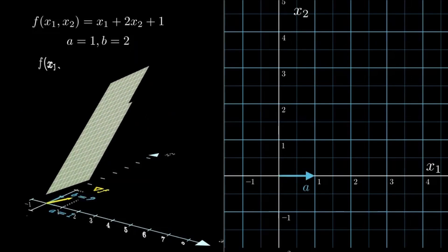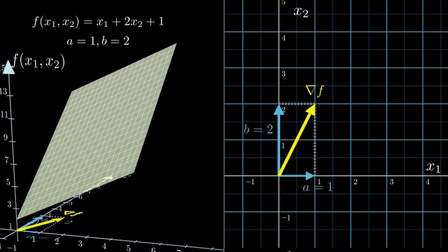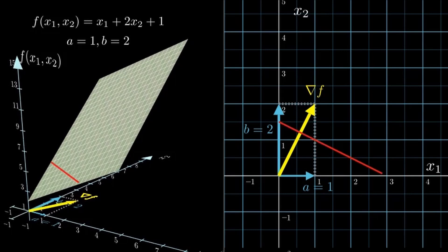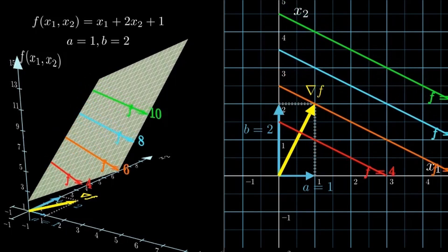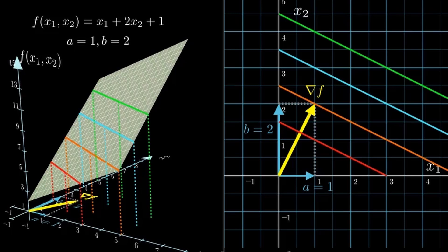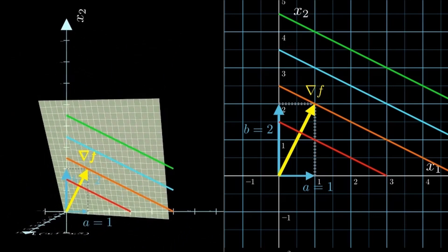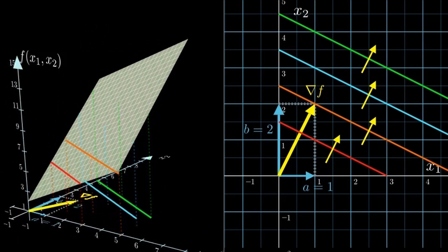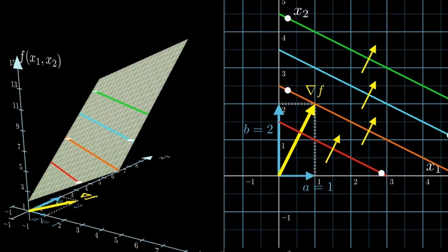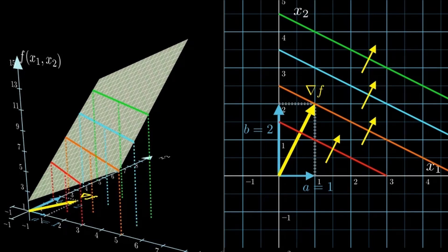Now let's see why the gradient is always perpendicular to contour lines. I'll draw four contour lines on this plane. Remember, a contour line connects all the points where f has the same value, so each color here means the same function value. Now let's project these lines onto the x1-x2 plane. Take a look—let's view them from above. Do you notice the gradient vector looks perpendicular to the contour lines? Why is that? Well, imagine moving along one of these contour lines. Does the function value change? No, it stays the same because by definition a contour line connects points with the same value of f, so the change in f—written as df—must be zero.